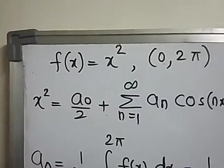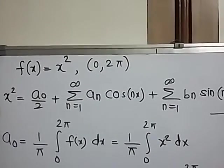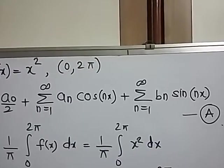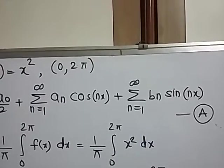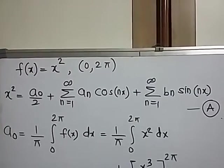Step 1, we write down the formula for Fourier series and that is a₀ divided by 2 plus sigma n to infinity aₙ cos(nx) plus sigma n to infinity bₙ sin(nx) and we call this as equation number A.